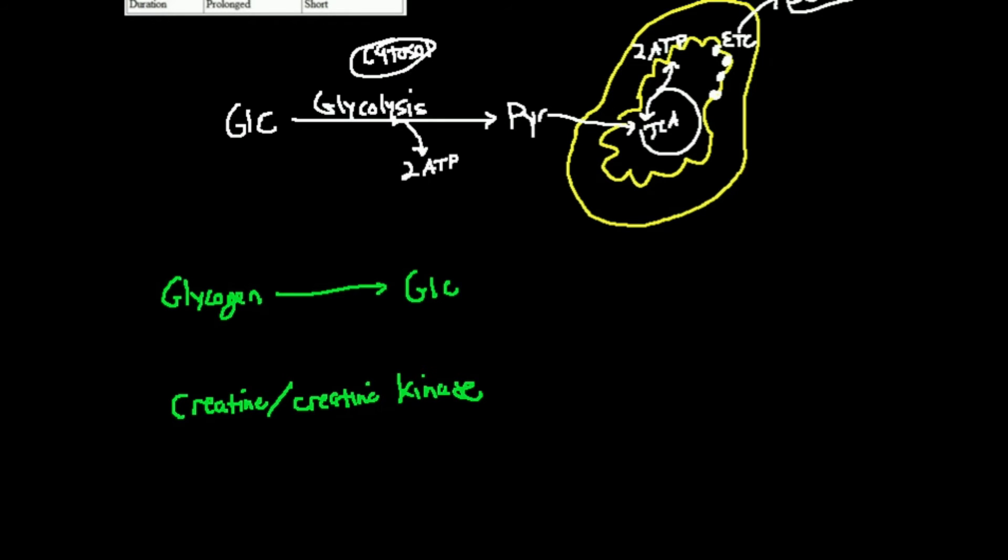And it turns out that type 2 muscle fibers are much better at storing glycogen. Type 2 fibers store a lot more of it. The enzyme that breaks down glycogen in case this ever cropped up on an exam or something is called glycogen phosphorylase. And we have a whole video on glycogen phosphorylase and how it works. But suffice it to say type 2 fibers are going to have more glycogen and more of this enzyme glycogen phosphorylase.